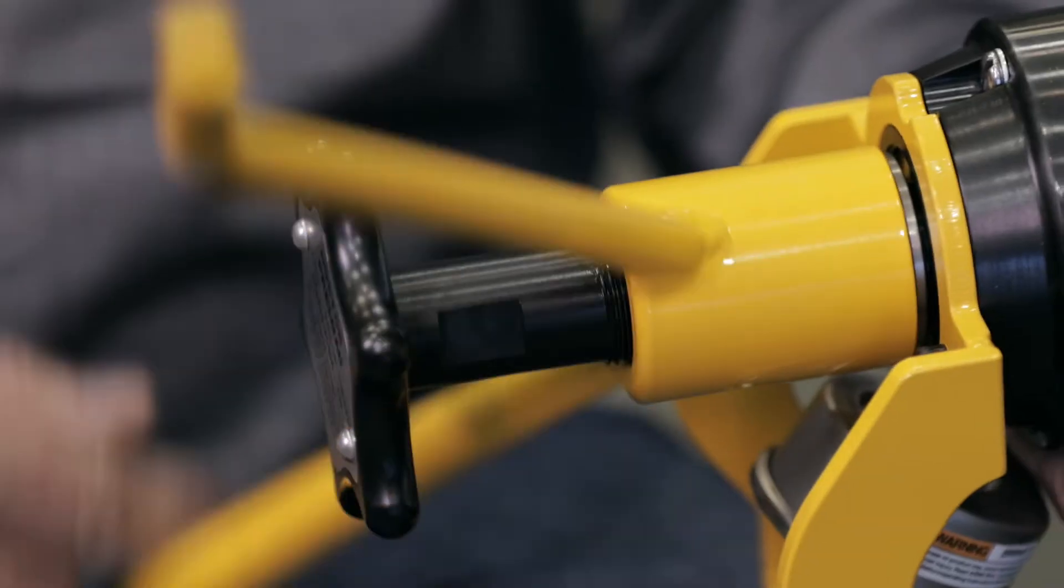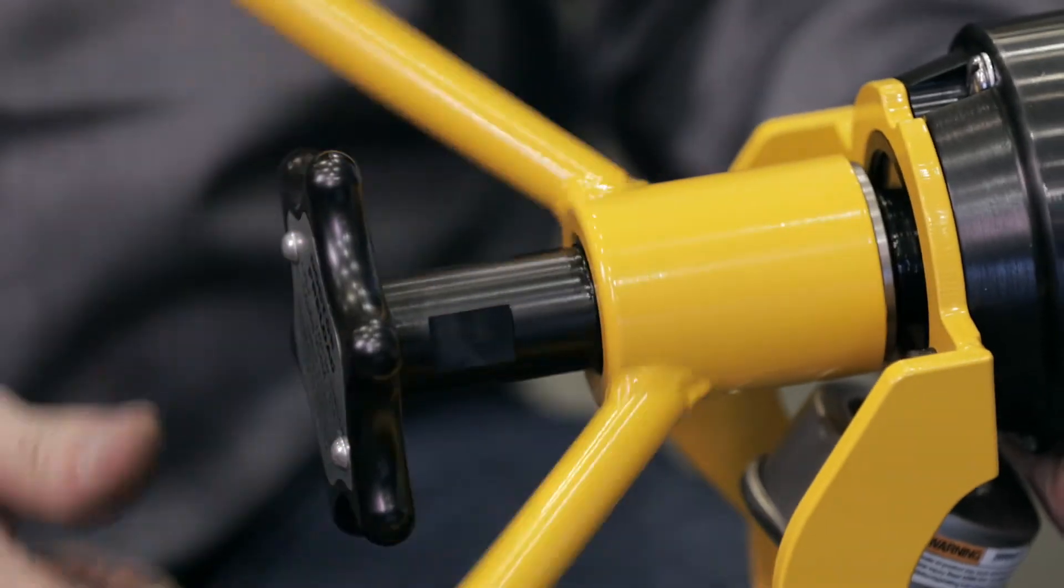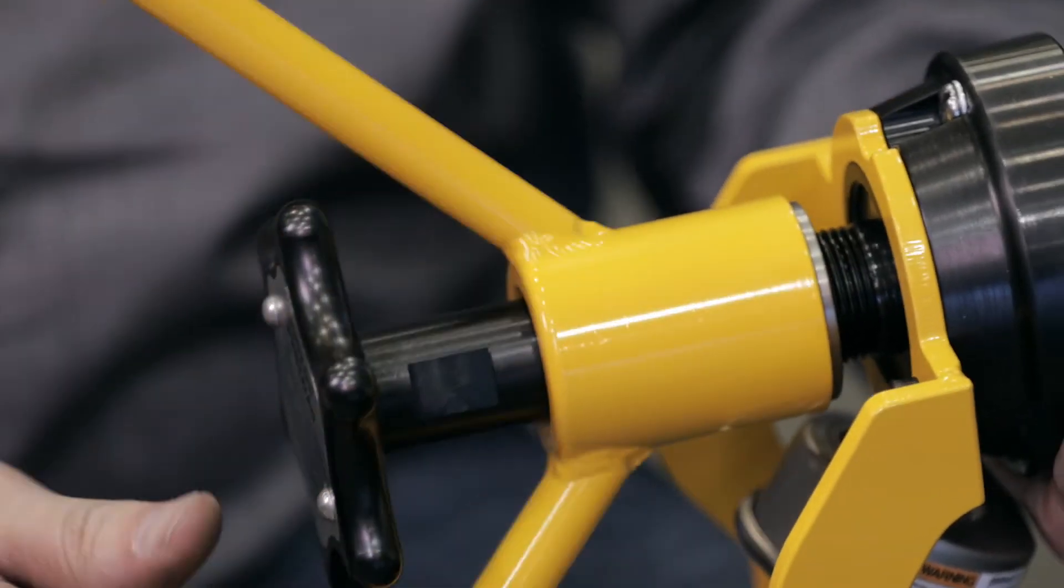Adjust the yellow T-handle so it is loosened to the point where it completely covers the threads on the shaft of the spindle adapter.